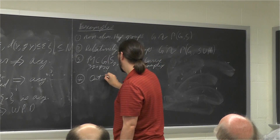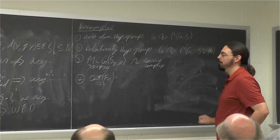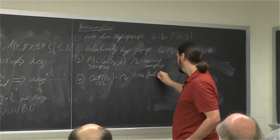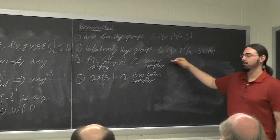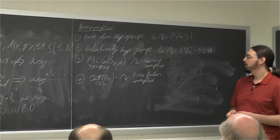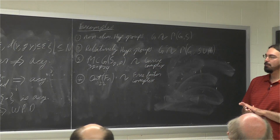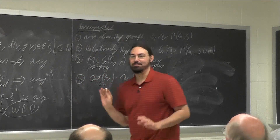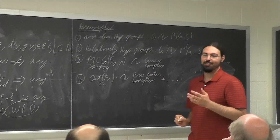Fourth is Out(F_n) for n at least 2, which has an action on what's called the free factor complex, intended as an analog of the curve complex. This is hyperbolic by work of Bestvina and Feighn. The action doesn't quite satisfy this definition of acylindricity — it's not known whether it does — but it satisfies the WPD condition, which together with a little more work gives an actual acylindrical action.